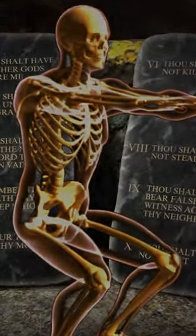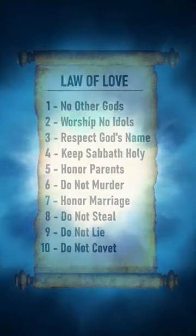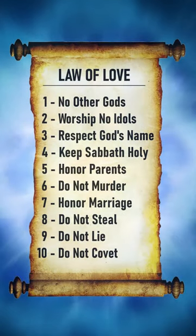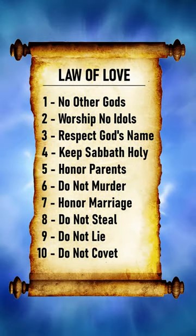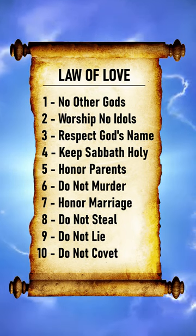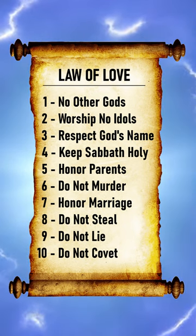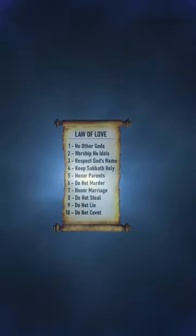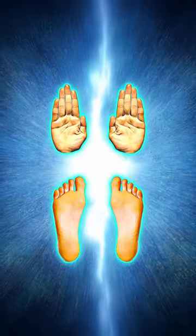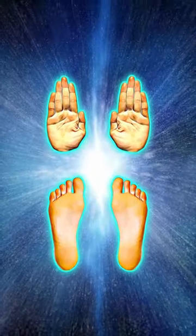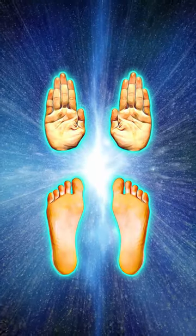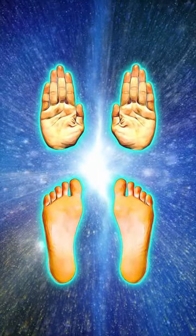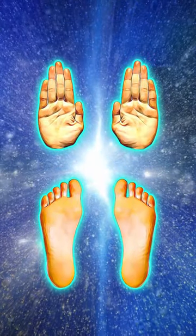God knew before he created the world that his law of love was divided into ten laws, and he knew those ten laws were so important they'd determine our eternal destiny. So when he made us, he created our physical bodies with two hands with ten fingers and two feet with ten toes as a physical reminder of his law of love.